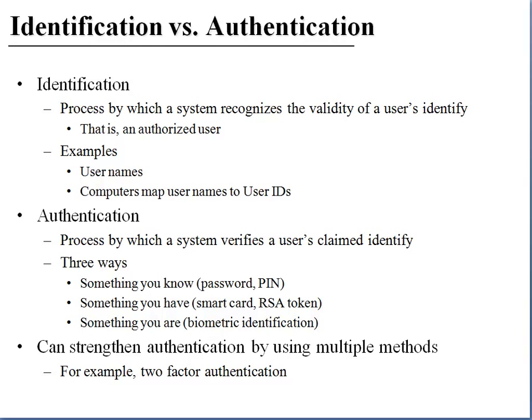The second factor is something the user has — for example, a smart card or an RSA token — that is, something physical that the user can hold.